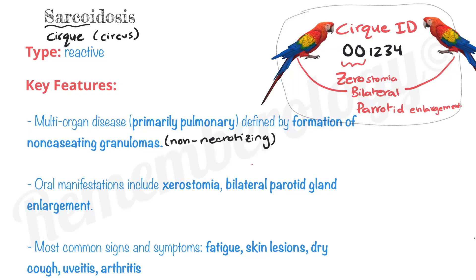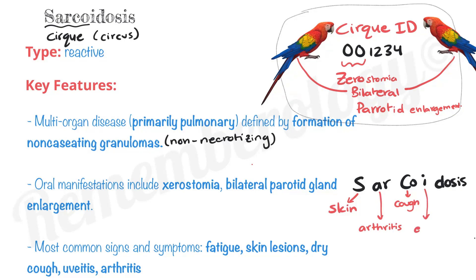To remember the most common signs and symptoms, they are present within the name SARCOIDOSIS itself. S stands for skin, R is arthritis, CO is cough, I is the eye or uveitis (inflammation of the middle layer of the eye), and then DOSES — he 'doses off' or goes to sleep because of fatigue.